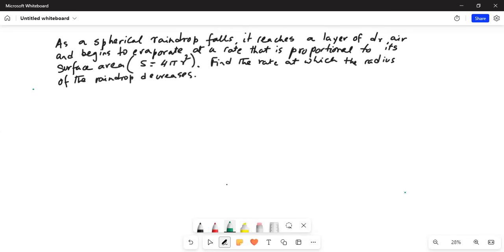As a spherical raindrop falls, it reaches a layer of dry air. It should be dry. Let me correct that. It reaches a layer of dry air and begins to evaporate at a rate that is proportional to its surface area. Surface area S is given by 4πr². Find the rate at which the radius of the raindrop decreases.